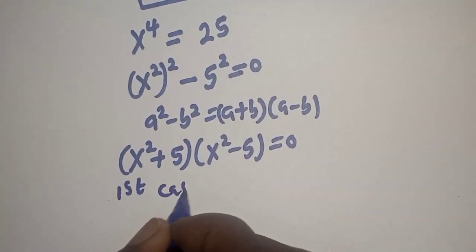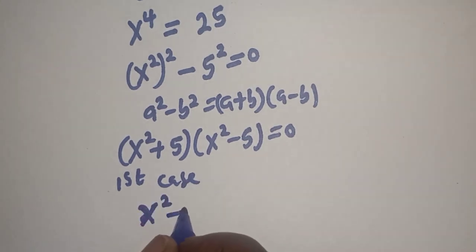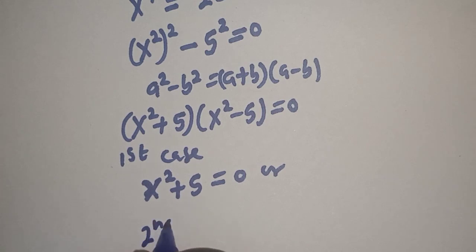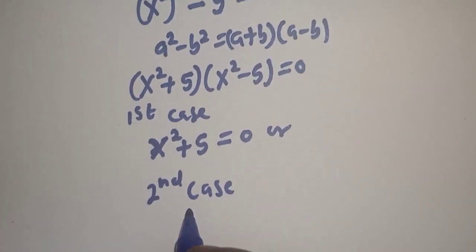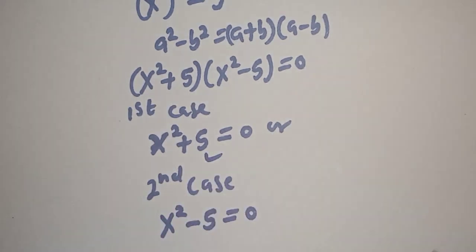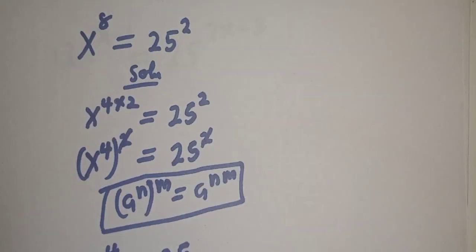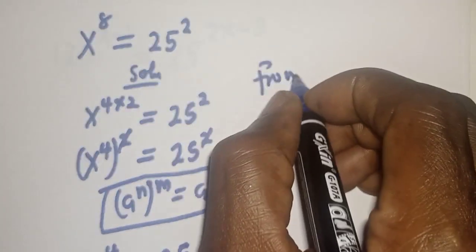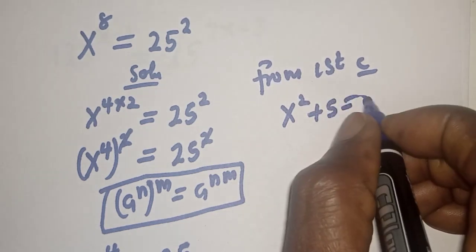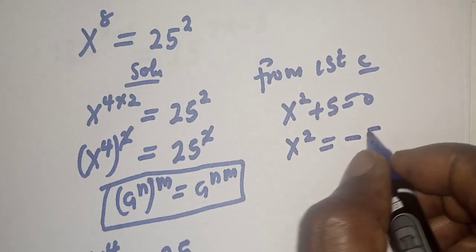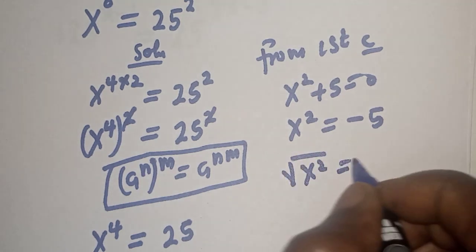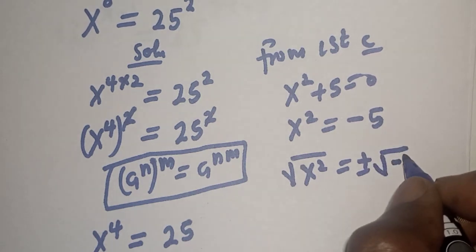So, there are two cases here. The first case: S squared plus 5 is equal to 0. The second case: S squared minus 5 is equal to 0. Let's work with the first case. From the first case, S squared plus 5 is equal to 0, so S squared is equal to minus 5. Let's take the square root of both sides.